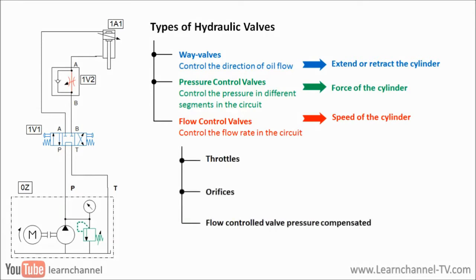Throttles and orifices are simple components that can control the flow rate across their cross-section. Flow control valves pressure compensated are more complex and can keep the flow rate constant even with a variable load. More about this device later.